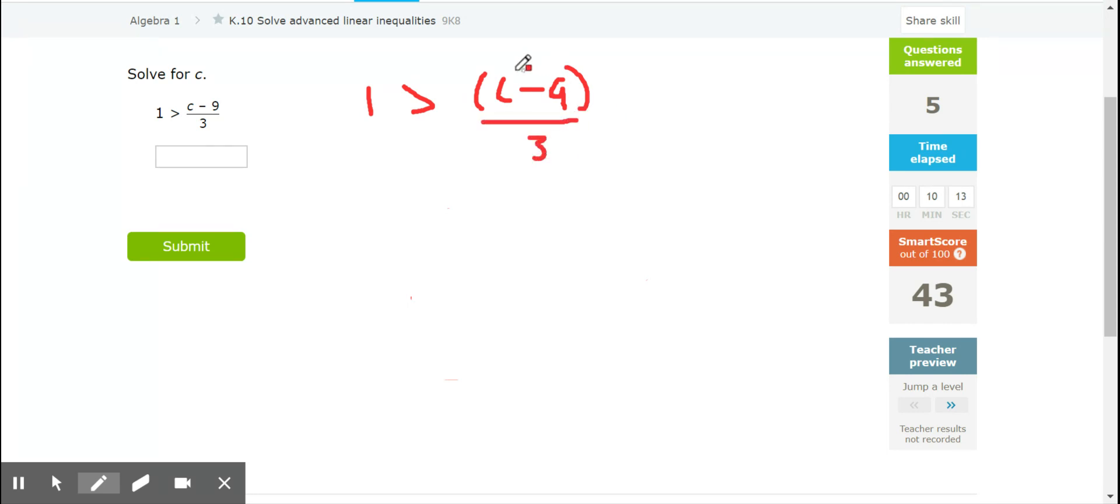So, since that's really in parentheses, and we reverse the order of operations when solving, I'm going to save this for last. So, I'm going to back out the division by multiplying both sides by a positive 3. The 3s will cancel, and this gives me 3 is now greater than C minus 9.